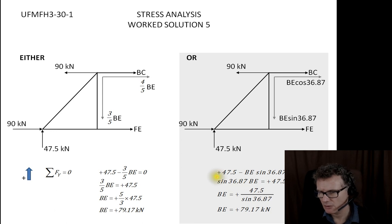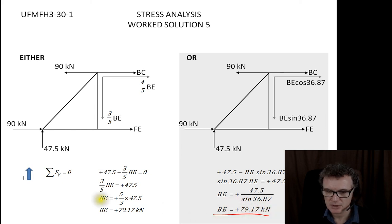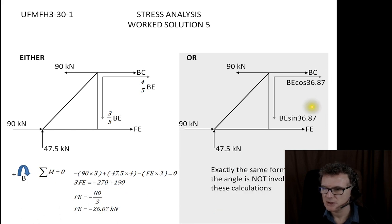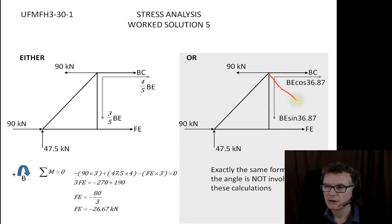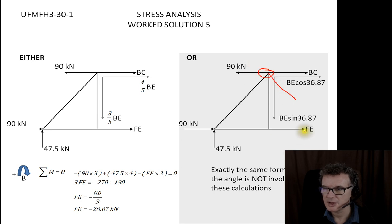We're doing the same thing — resolving in Y first and ending up with the same value as before. The problem with using angles is that you tend to get a little truncation error creeping in. For the moments equation, since the force being split is the BE force and we're taking the pivot at the BE origin, there are no angles involved in that particular equation — so it's identical to before.